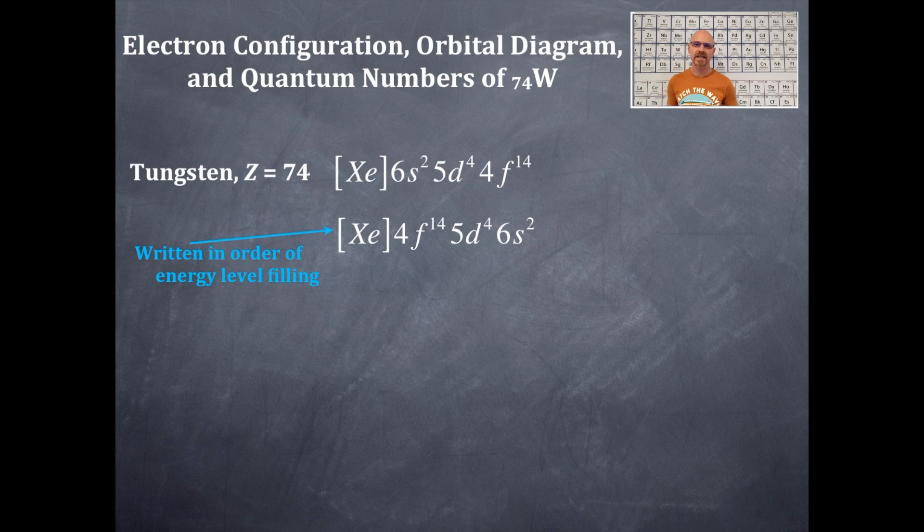That tells you the number of valence electrons right away also, because tungsten is in the boot. Therefore, it should have 2, which 2? It's the 6s2. We'll come back to that in just a bit, but I did go forward with that.